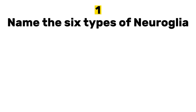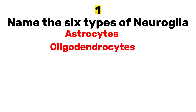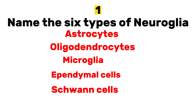Number 1. Name the 6 types of Neuroglia. Astrocytes, Oligodendrocytes, Microglia, Ependymal Cells, Schwann Cells and Satellite Cells. These are the 6 types of Neuroglia.